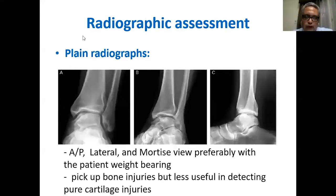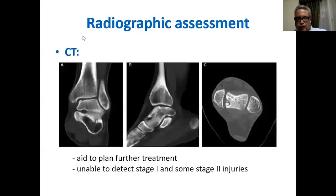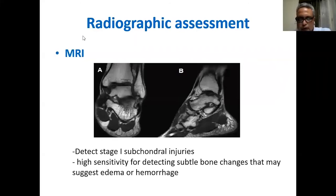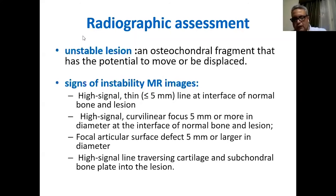For radiographic assessment, plain X-rays — including anteroposterior, lateral, and mortise views — can be useful, and I prefer weight-bearing films. However, X-rays can only show bony injuries, not purely cartilage injury. CT scan sometimes adds to the diagnosis but may not give a good picture of cartilage state or bone marrow edema. MRI is very sensitive — it can detect even Stage 1 lesions with subchondral injuries, bone marrow edema, and surrounding soft tissue edema, making it a very helpful tool.